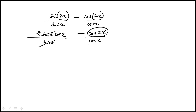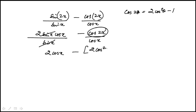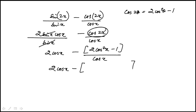I'm going to rewrite cosine 2x in terms of cosine x. The identity you need to know is cosine 2x equals 2 times cosine squared x minus 1. So I'll start with that over cosine x, which becomes 2 cosine x — dividing each term — giving us 2 cosine x minus 1 over cosine x.